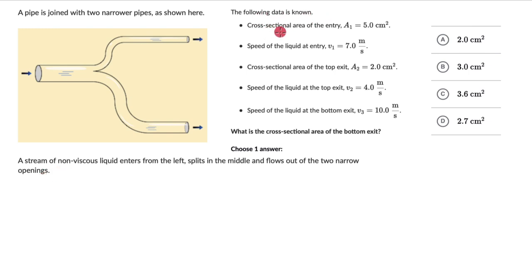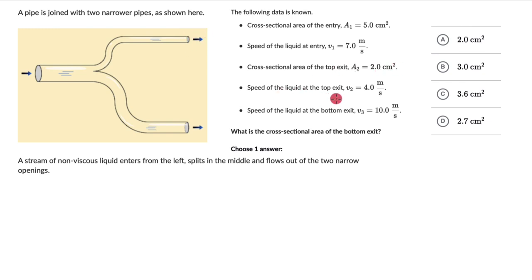We have some data. Cross sectional area of the entry A1 is 5 cm². Speed of the liquid at entry is 7 meters per second. Cross sectional area of the top exit A2 is 2 cm². Speed of the liquid at the top exit is 4 meters per second. Speed of the liquid at the bottom exit V3 is 10 meters per second. What is the cross sectional area of the bottom exit?